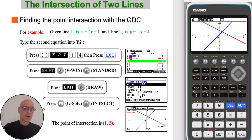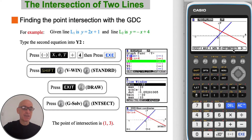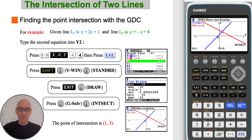To find the point of intersection, press F5 for G-Solve and then press F5 again for intersection. We can see that the point of intersection of the two lines is 1 comma 3.